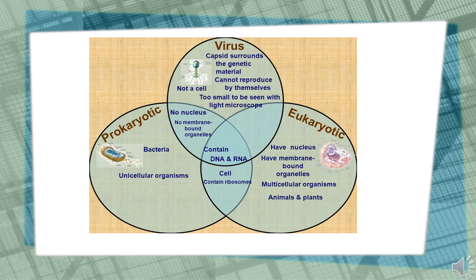Eukaryotes may be single-cell or multicellular organisms, carrying their genetic material in the form of chromosomes inside a distinct nucleus. They have organelles that carry out specific cell functions. Fungi are examples of eukaryotes that can be single-cell or multicellular organisms. All multicellular organisms are eukaryotes, including humans.